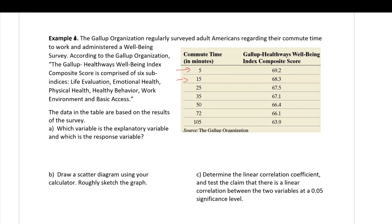Well-being indexes are typically a score from zero to 100, used in social sciences to quantify things that are hard to measure. In this case, they evaluate life evaluation, emotional health, physical health, healthy behavior, work environment, and basic access, averaging them into the well-being index. The higher your score, the more well-off you are — these aren't perfect sciences, but they do the best they can.